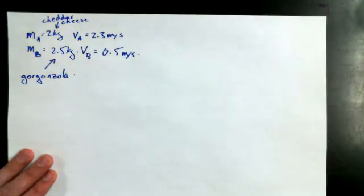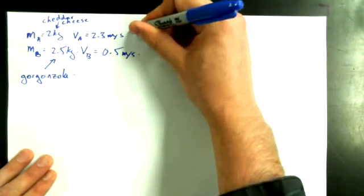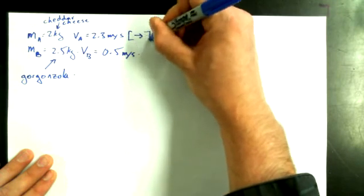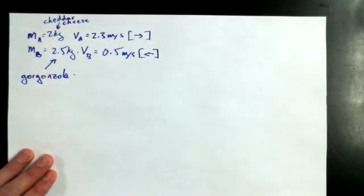And VB is going to be equal to 0.5 meters per second. Okay. Now I want these guys to be going, actually I should say, let's make VA be going to the right. And let's make VB going to the left.